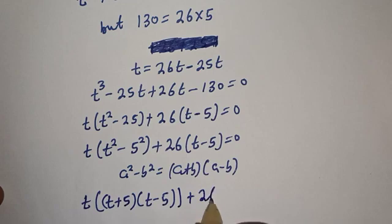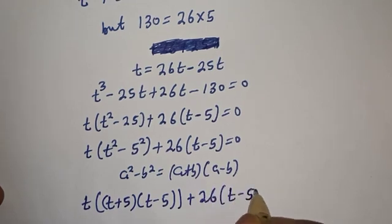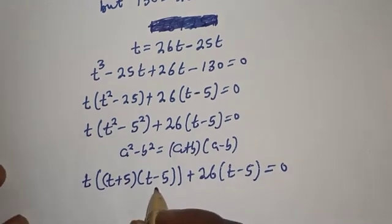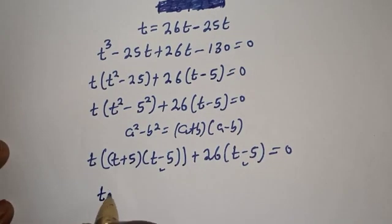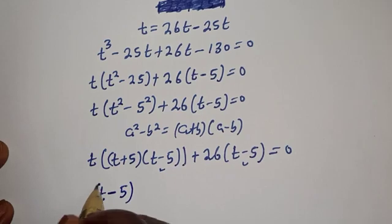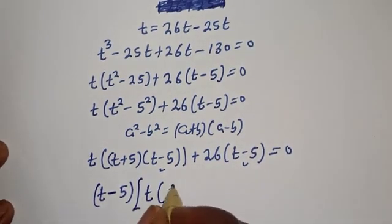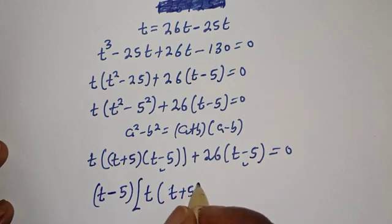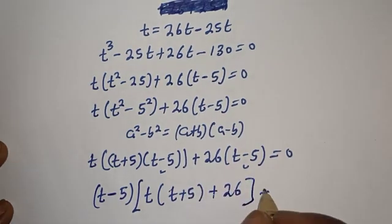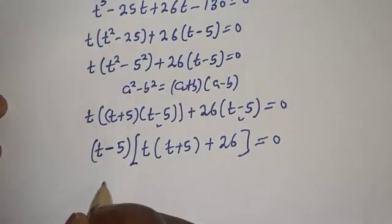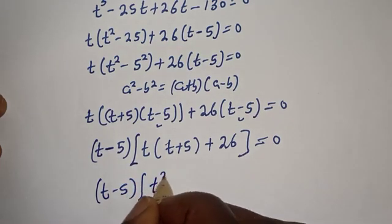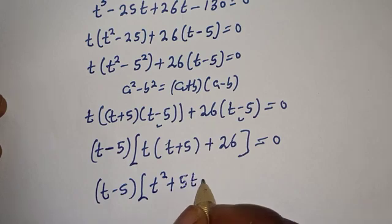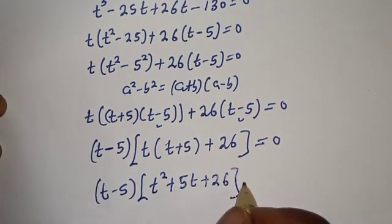Plus 26 bracket t minus 5 is equal to zero. t minus 5 is common, so we factor it out: t minus 5 bracket t times t plus 5, plus 26, equals zero. This gives t minus 5 bracket t squared plus 5t plus 26, equals zero.